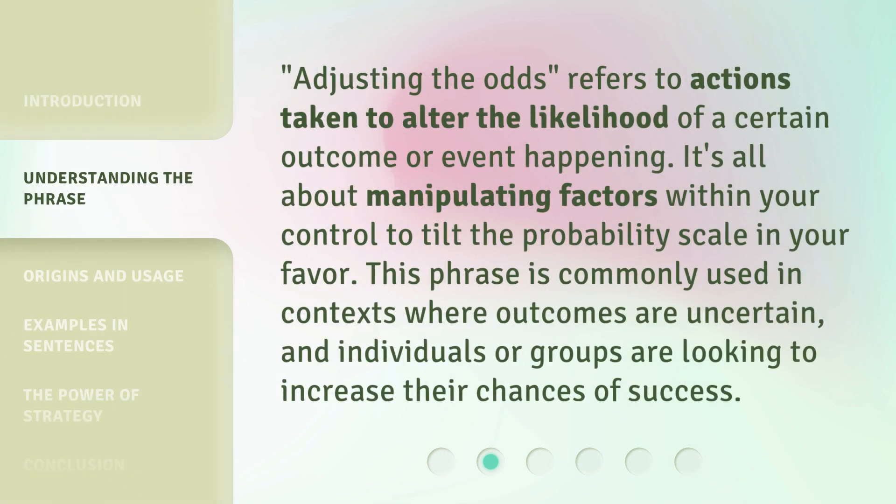Adjusting the odds refers to actions taken to alter the likelihood of a certain outcome or event happening. It's all about manipulating factors within your control to tilt the probability scale in your favor. This phrase is commonly used in contexts where outcomes are uncertain, and individuals or groups are looking to increase their chances of success.